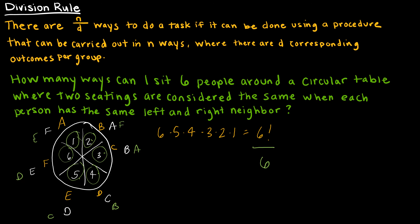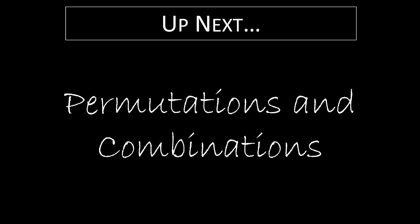The result is 6 factorial divided by 6 — the same order A, B, C, D, E, F just rotated through one, two, three, four, five, or six positions. Coming up next, we're going to take a look at permutations and combinations.